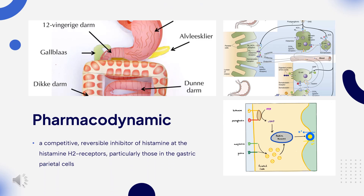Pharmacodynamics: Nizatidine is a competitive, reversible inhibitor of histamine at the histamine H2 receptors, particularly those in the gastric parietal cells. By inhibiting the action of histamine on stomach cells, nizatidine reduces stomach acid production.